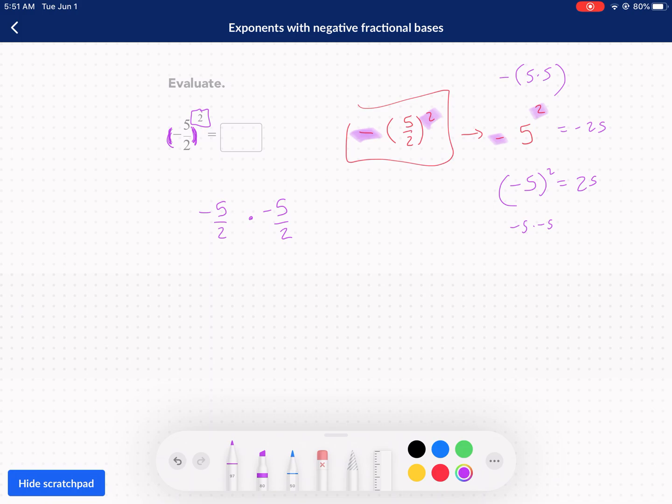Whereas this is positive 25 because you have a negative 5 times a negative 5. This one you have a 5 times a 5 and you're just applying the negative at the end. So key distinction there. But let's get back to the original problem.